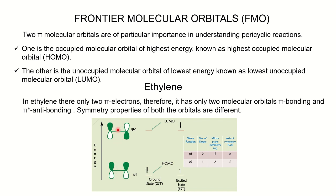For psi 2, placing a mirror plane shows it is asymmetrical. After rotating 180° the colored lobe goes above the plane making it symmetrical. So for ethylene: psi 1 has 0 nodes (symmetrical S), psi 2 has 1 node (asymmetrical A). For ground state (thermal reactions), HOMO is psi 1 and LUMO is psi 2.